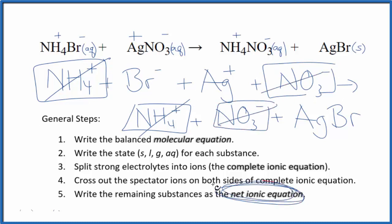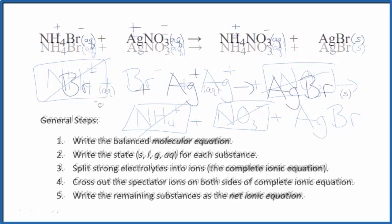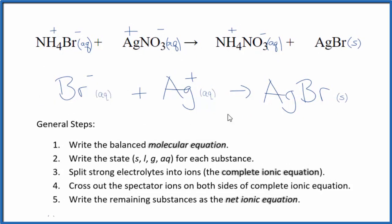What's left is the net ionic equation for NH4Br plus AgNO3. Adding the states in, we have our balanced net ionic equation for ammonium bromide plus silver nitrate: Ag+(aq) + Br−(aq) → AgBr(s). You'll note that charge is conserved — we have a positive and a negative charge that balance out to a net charge of zero, and this neutral compound also has a net charge of zero. The atoms are balanced as well.